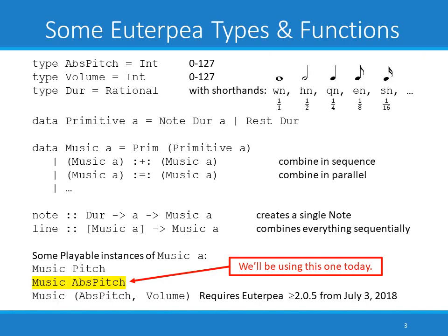This slide shows an overview of some of the more commonly used types in Euterpe. We have a couple of important type synonyms. AbsPitch, short for absolute pitch, is an integer representation for pitches and is just a type synonym for Int, as is volume. The values expected for these adhere to the MIDI standard of 0 to 127. We represent duration, or dur, as a rational, and we have a few shorthands: wn is short for whole note, hn is short for half note, and so on down to 16th note.